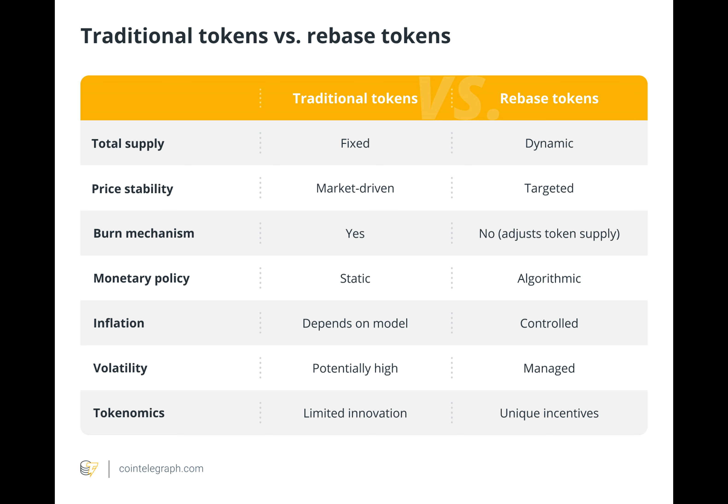Rebase tokens are a particular kind of cryptocurrency that periodically — typically daily or multiple times a day — modifies its total supply. The adjustments seek to stabilize the rebase token's price or target a specific value through methods that increase or decrease the token supply in reaction to price deviations from the target.